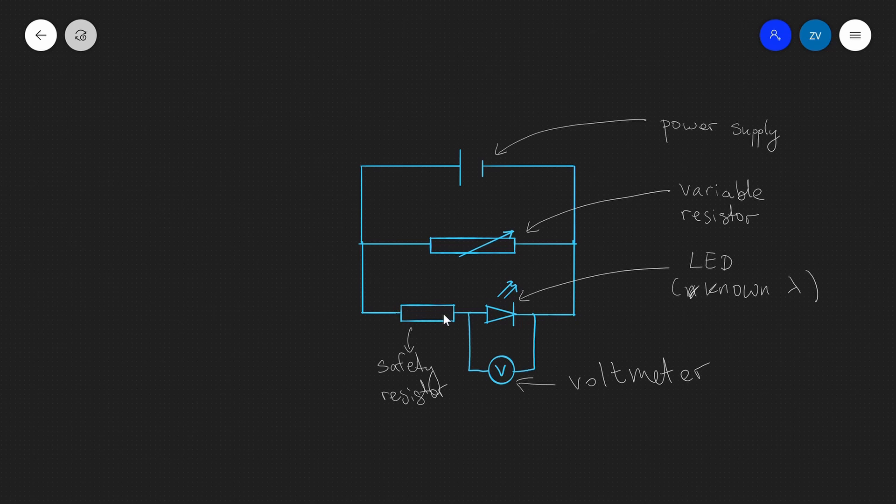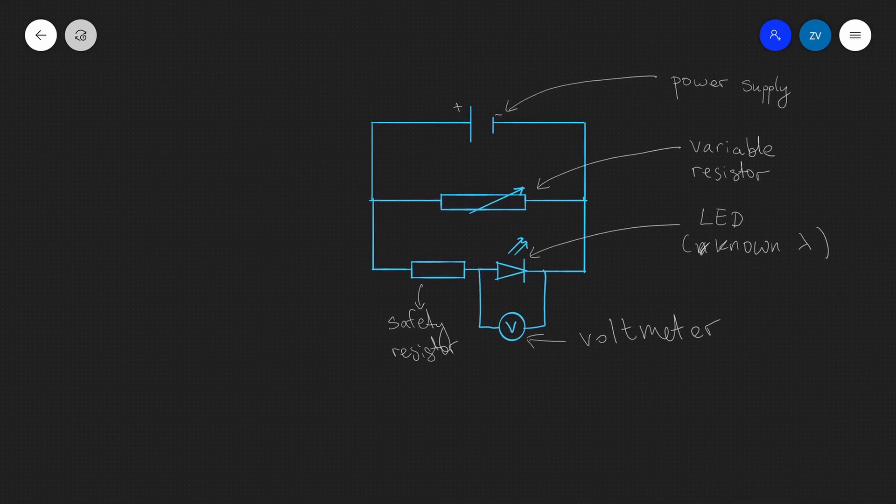Now something really really important, this experiment will not work if the LED is not pointing the right way around. Remember the LEDs need to point out from the positive terminal to the negative terminal. We can see that this LED over here is correctly positioned in the circuit which we have. If it was turned the other way around the circuit will just not start. So this is something that we need to be aware of.